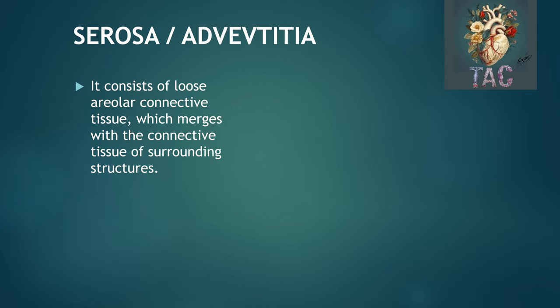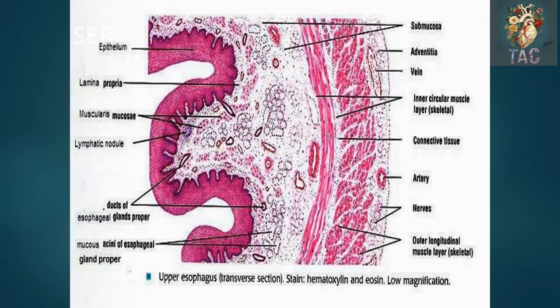Outer to the muscularis externa in the esophagus is the serosa or the adventitia — it consists of loose areolar connective tissue which merges with the connective tissue of surrounding structures. Again you can see the diagram and revise from it. The whole mucosa consists of epithelium, then lamina propria, and then muscularis mucosa. The next layer is the submucosa — moderately dense connective tissue having tubulo-alveolar glands called esophageal glands proper, which empty their secretion via ducts onto the surface of the esophagus. Also appreciate the blood vessels — arteries and veins — and then muscularis externa and then serosa.